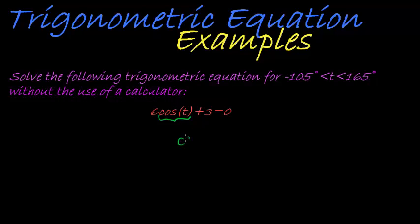First of all, we get cos of t on its own by subtracting 3 on both sides, to get 6 cos t equal to negative 3. Then to get rid of the 6, we will divide everything by 6. So this divided by 6 gives me that cos of t is equal to negative one half.